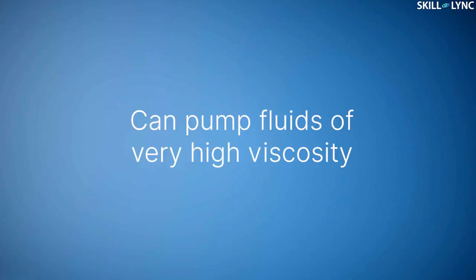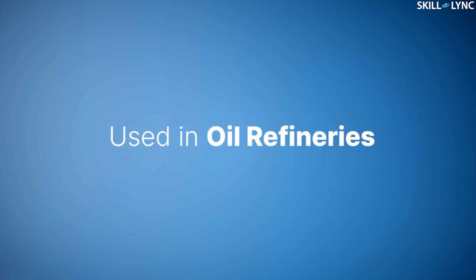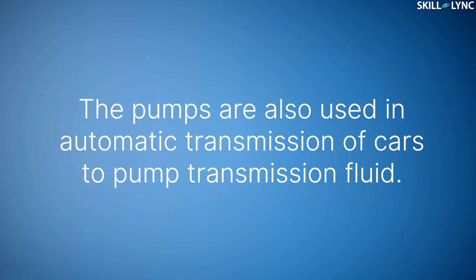The crescent pumps are able to pump fluids with much higher viscosity than gear rotor pumps. These pumps are most commonly used in oil refineries to pump oil into the holding tanks. The pumps are also used in automatic transmission of cars to pump transmission fluid.